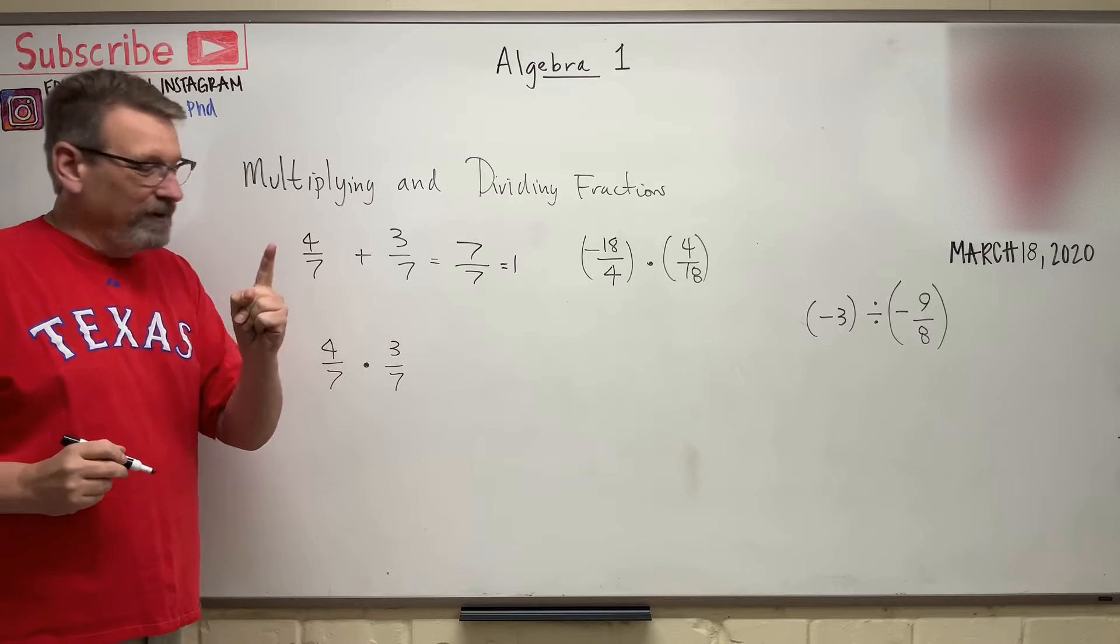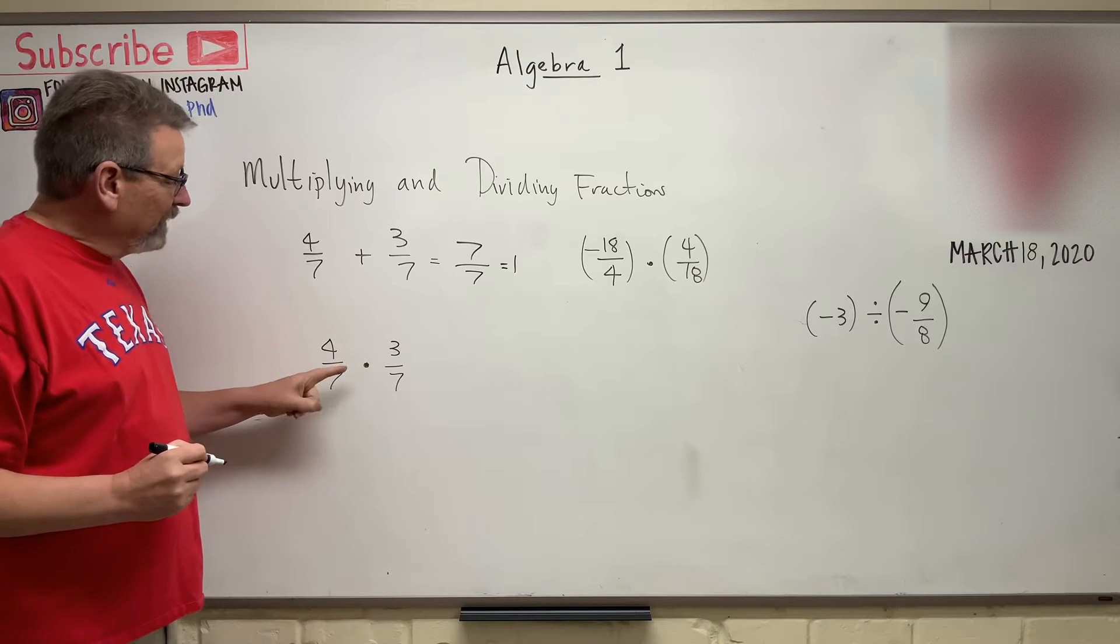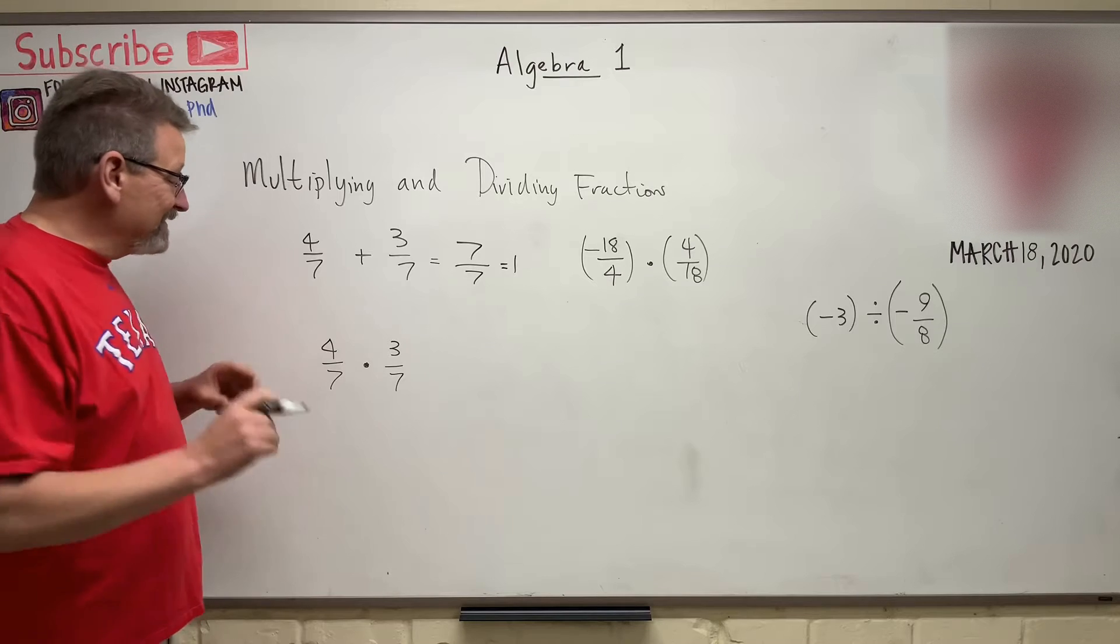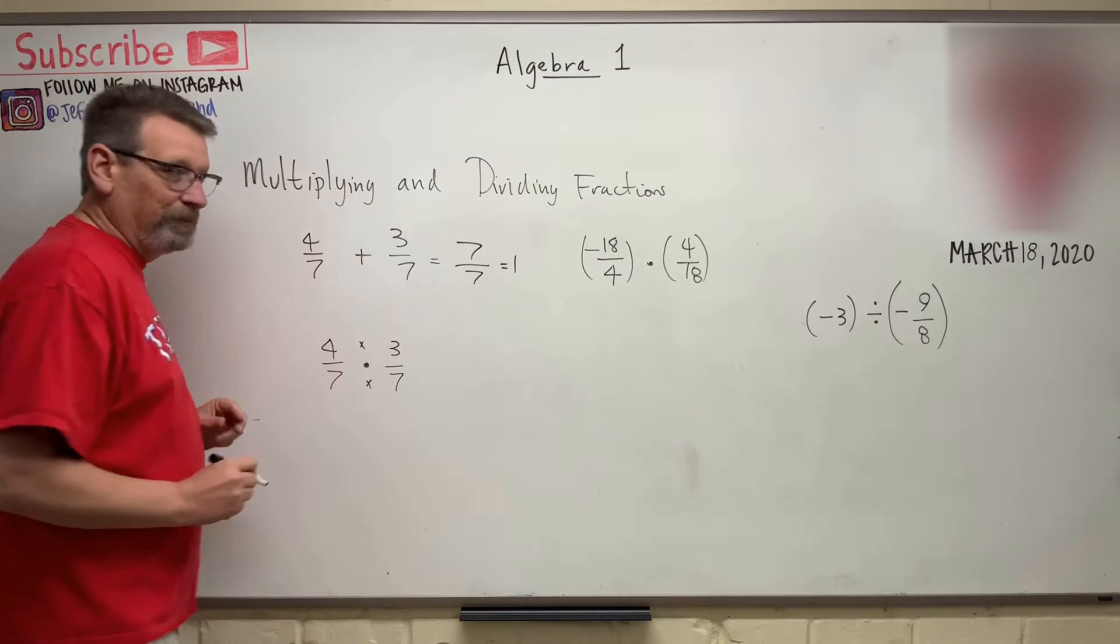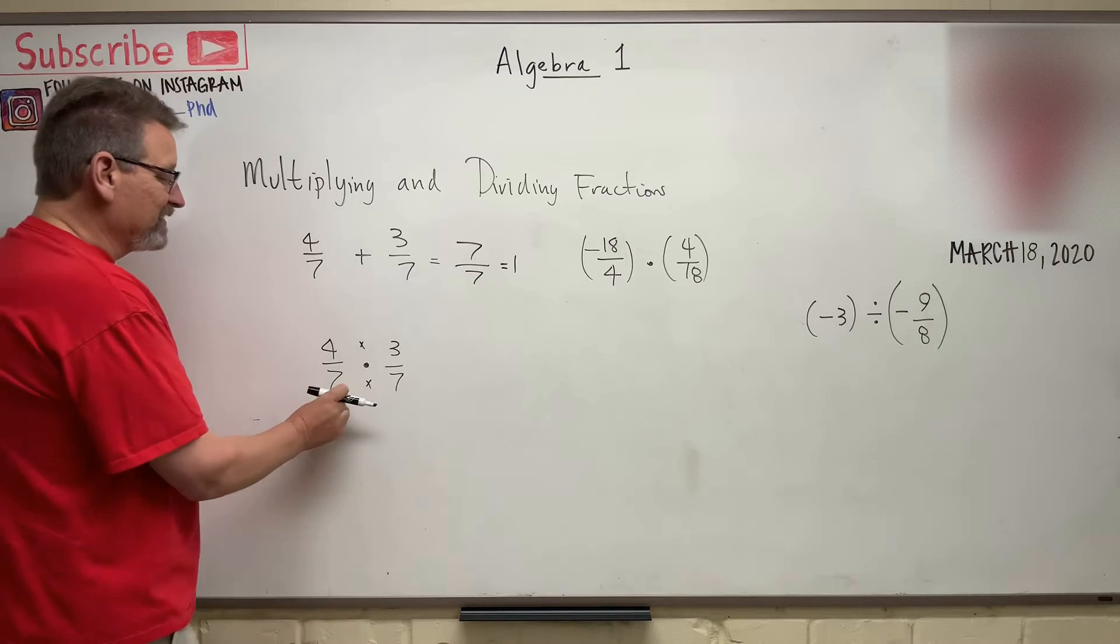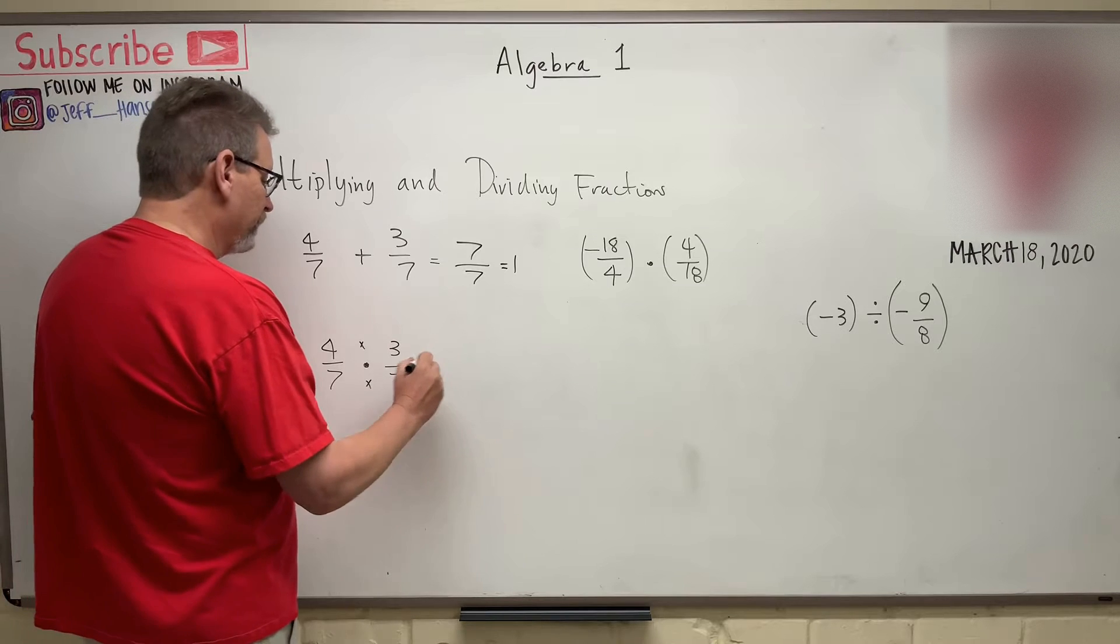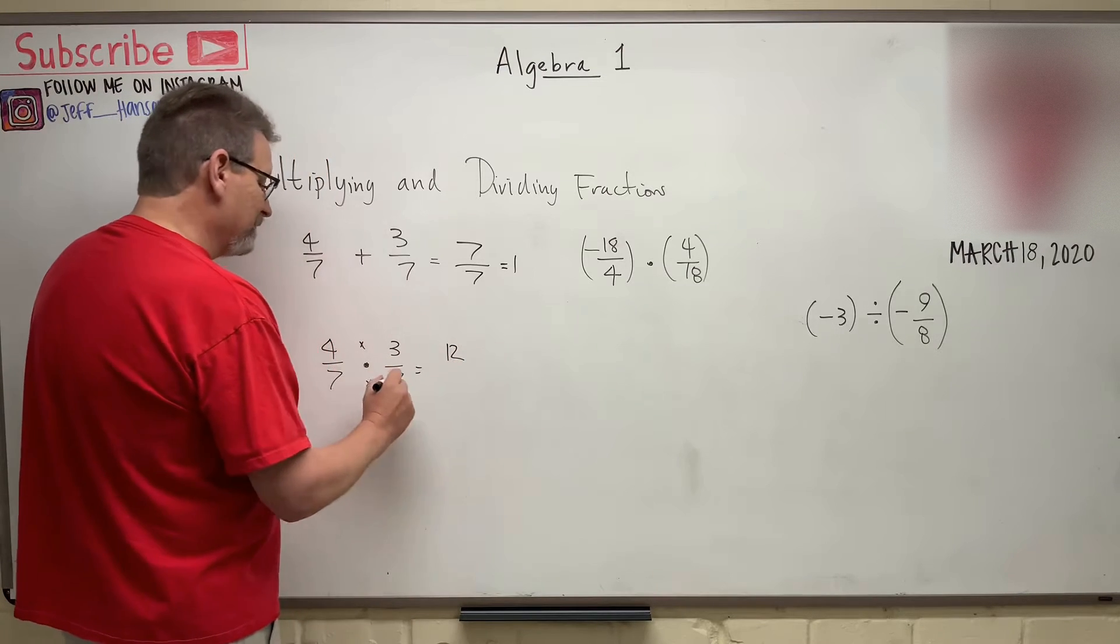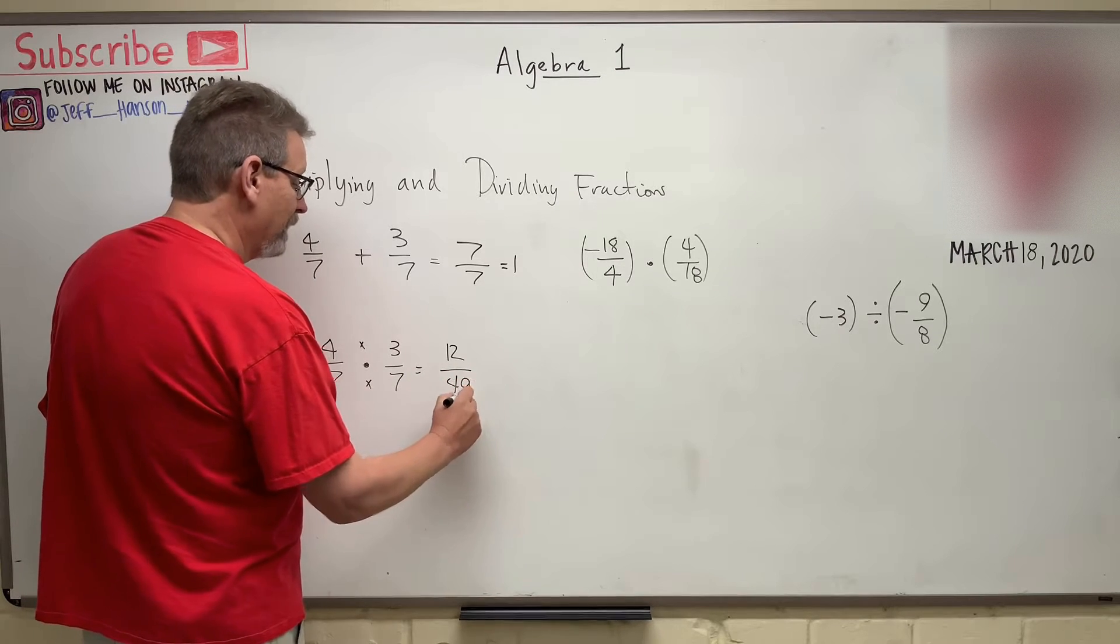Well, that's different when you're multiplying fractions together. When you're multiplying fractions together, the thing that's different is the bottom is multiplied together and the top is multiplied together. So this does not stay over 7. This turns into 4 times 3 is 12 and 7 times 7 is 49.